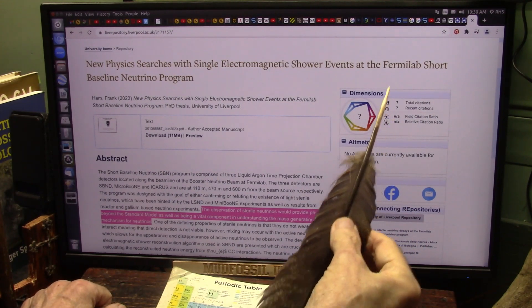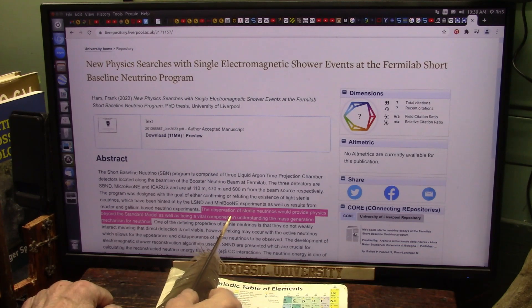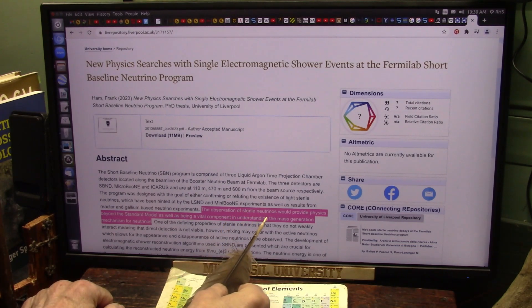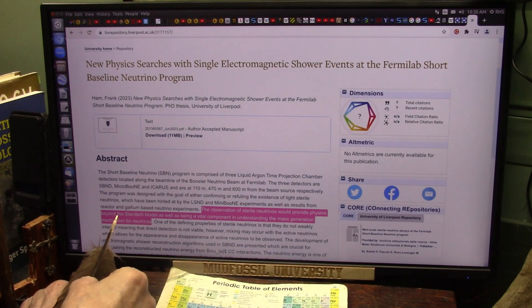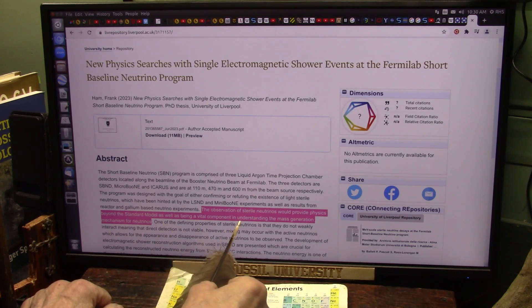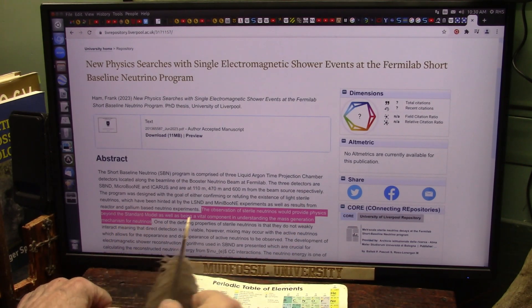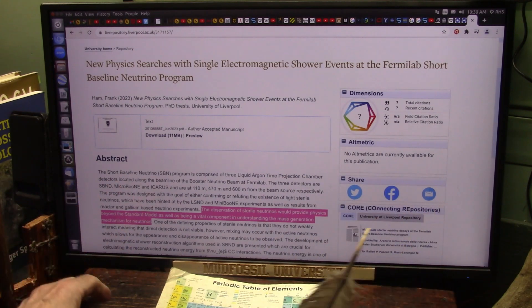Fermilab is the one that stood in the way of all this. They're saying right here, the observation of sterile neutrinos would provide physics beyond the standard model as well as being a vital component in understanding the mass generation mechanism for neutrinos, which leads to free energy.